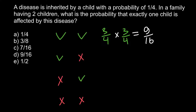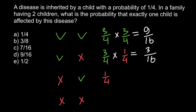For the second variant, the probability that the first child is phenotypically normal is three quarters, and the probability that the second child is affected is one quarter. Multiplying these two independent probabilities gives us 3 out of 16. In the third variant we get the same result — 3 out of 16 — for the first child being affected and the second child being phenotypically normal.